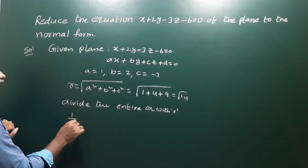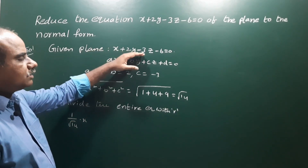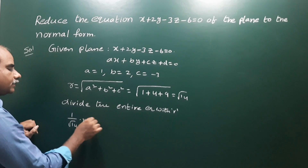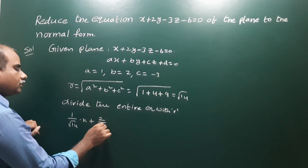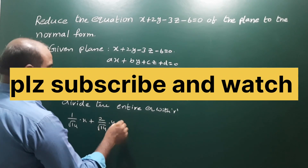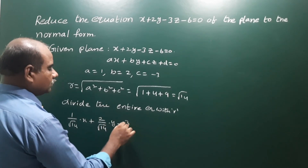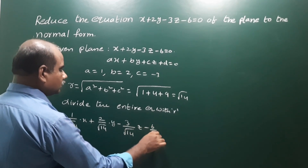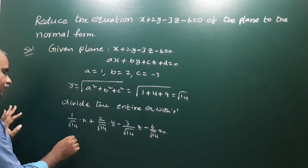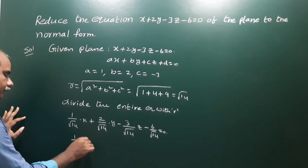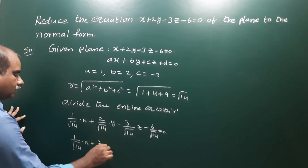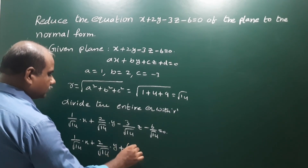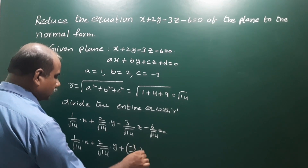So dividing the entire equation by root 14: x becomes 1 by root 14 into x, y becomes 2 by root 14 into y, z becomes minus 3 by root 14 into z, and the constant term becomes minus 6 by root 14, equal to 0. This can be written as 1 by root 14 times x plus 2 by root 14 times y plus minus 3 by root 14 times z.